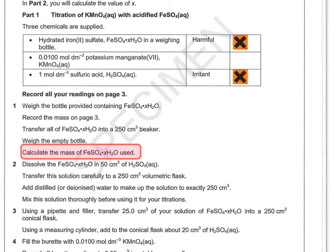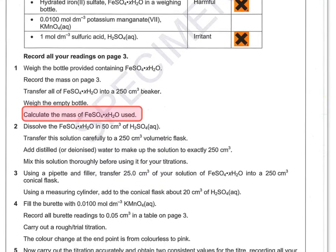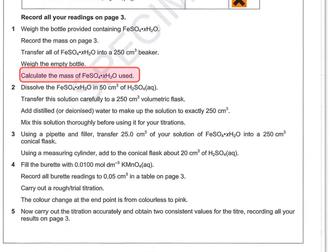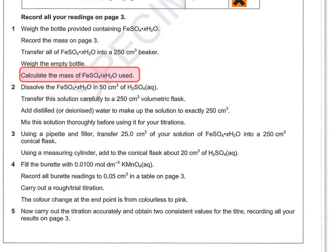So the first thing you'll need to do is to calculate the mass of FeSO₄·xH₂O used. And moving the page down a bit, all of the other things that you're told to do are actually practical based. So we can go on to the next page now where you can see the rough data that I've managed to obtain so you can calculate the mass of iron sulfate used.